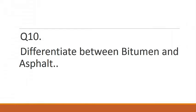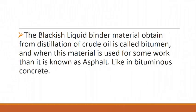Question ten is: differentiate between bitumen and asphalt. The blackish liquid binder material obtained from the distillation of crude oil is known as bitumen. When this bitumen material is used for construction work, it is then known as asphalt. So bitumen used in concrete roads can be called asphalt.